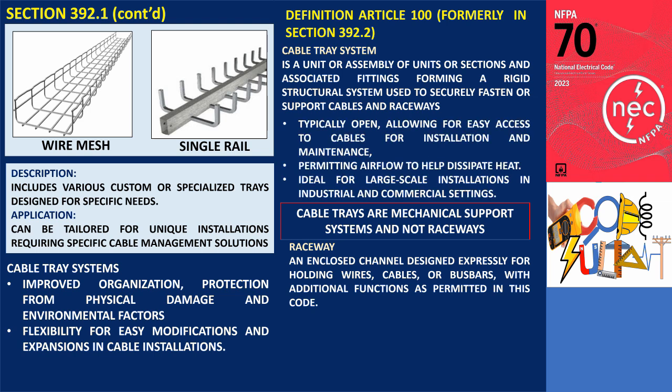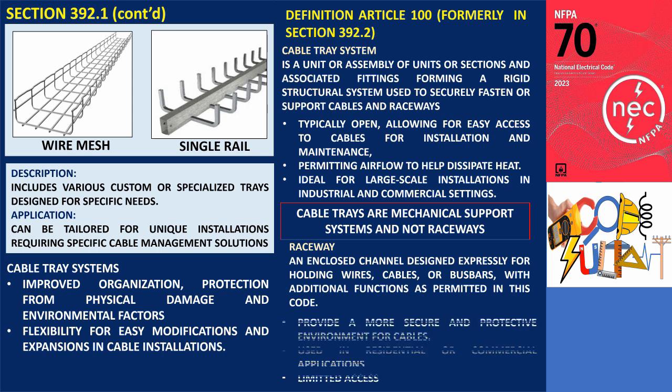The key difference lies in the structure and function of each system. Cable trays are typically open, allowing for easy access to cables for installation and maintenance, as well as permitting airflow to help dissipate heat. They are versatile and can accommodate a wide variety of cable types and sizes, making them ideal for large-scale installations in industrial and commercial settings. In contrast, raceways provide a more secure and protective environment for cables, often being used in residential or commercial applications where specific cable protection is necessary. Their enclosed nature can limit access, requiring additional effort to reach the cables inside.